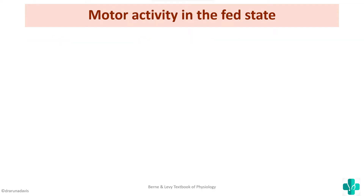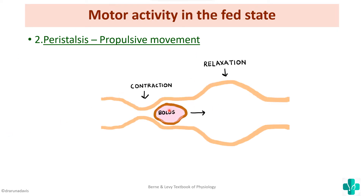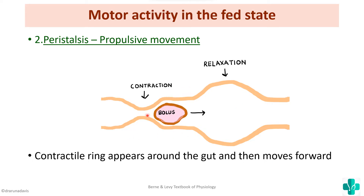The next important motor activity in the fed state is peristalsis. Peristalsis can be asked as a short note itself. It not only occurs in the small intestine but throughout the GI tract, and we know it is a propulsive movement. If there is a bolus of food, there will be a constriction ring just before the bolus and relaxation just after it, allowing the bolus to move forward. The contractile ring appears around the gut and moves forward, pushing the bolus ahead.